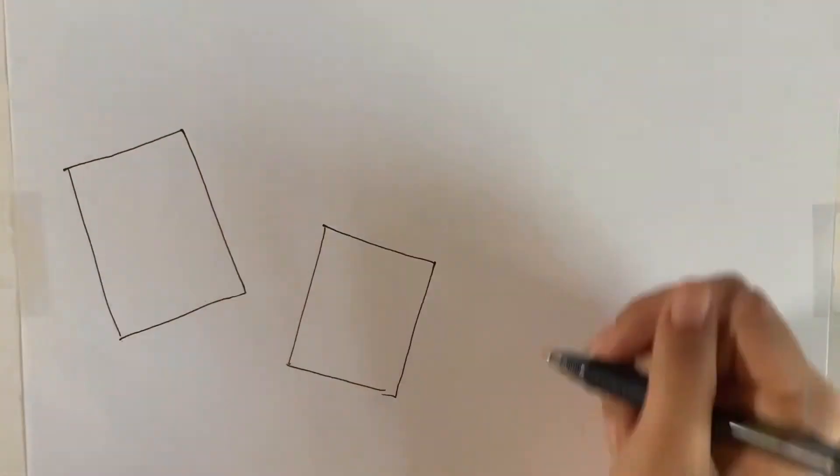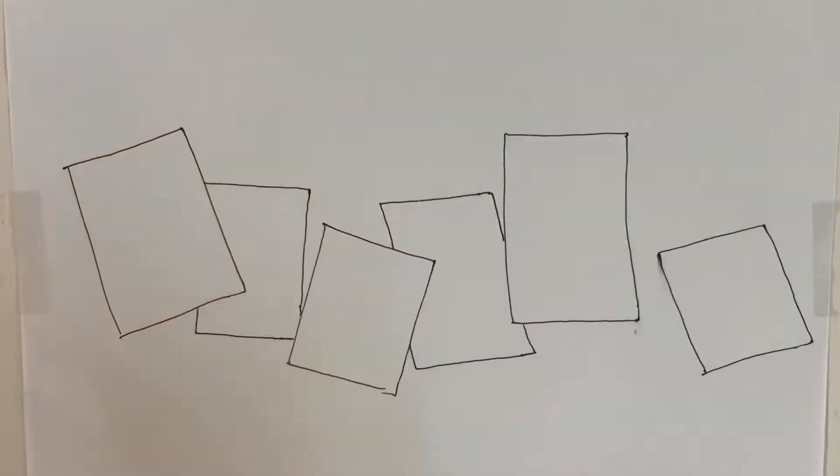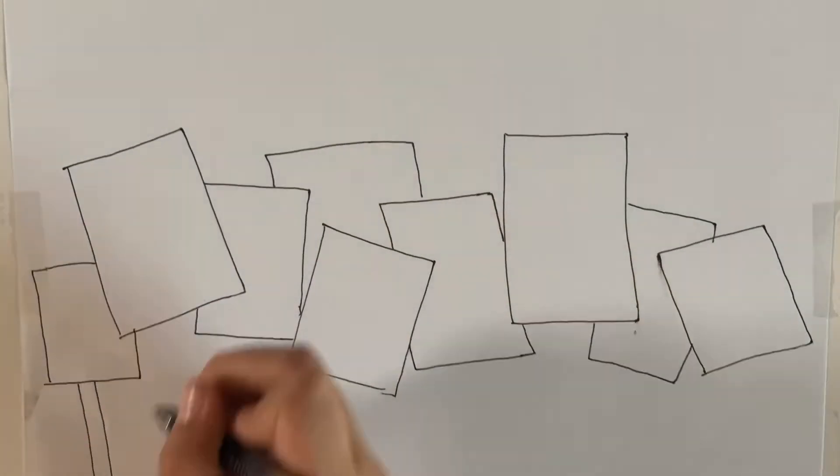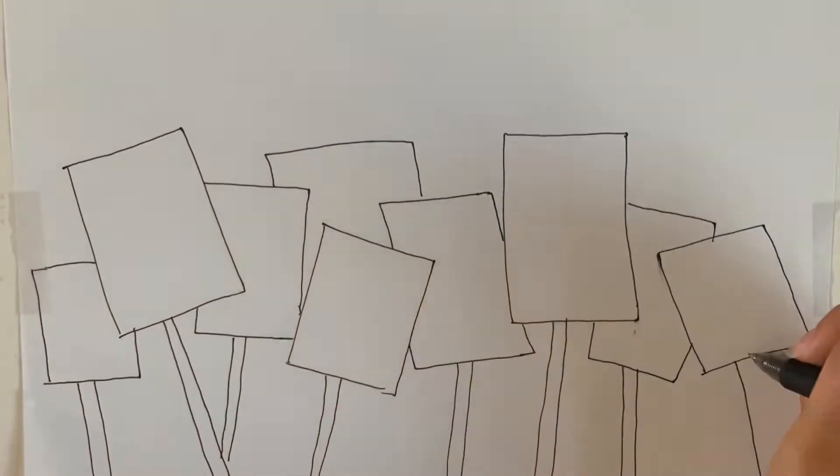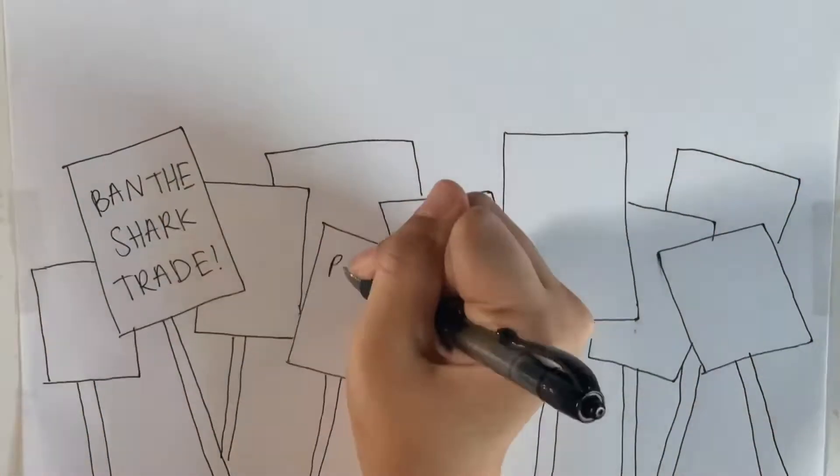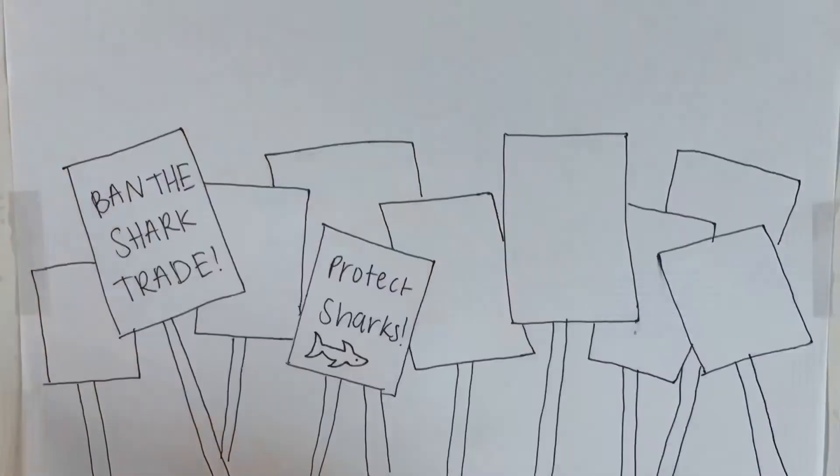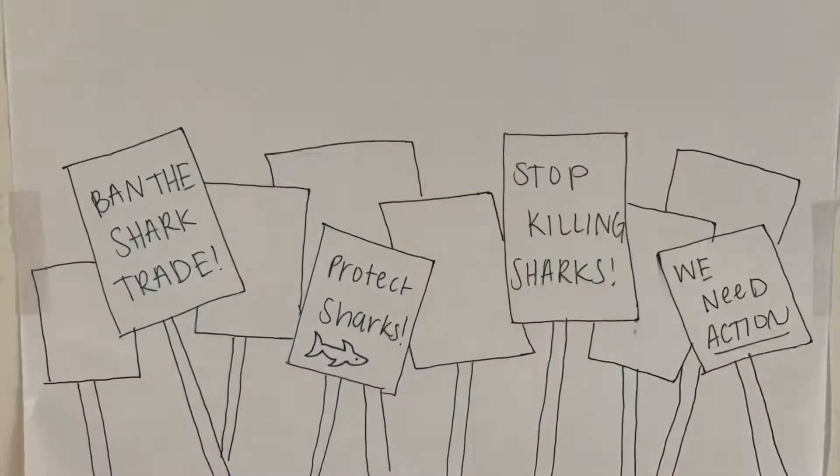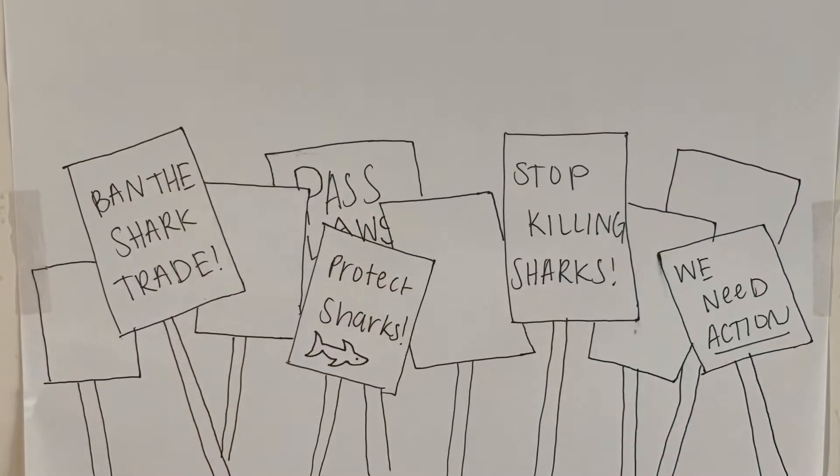The main ways that shark finning can be prevented are through boycotting and legislation. Boycotting works by educating consumers on where their shark fin soup comes from and why it's so bad. From there, consumers can make the educated decision to no longer purchase shark fin soup. If the demand for the soup goes down, there will no longer be a need to fin these sharks.